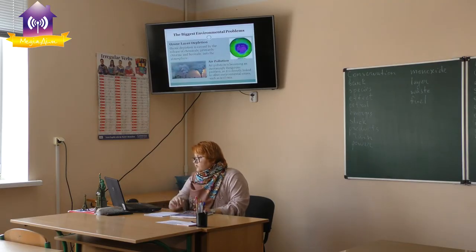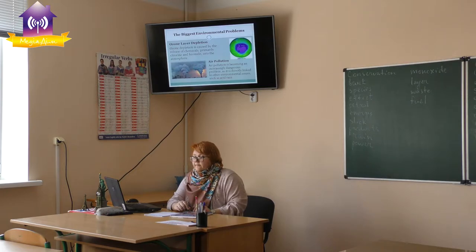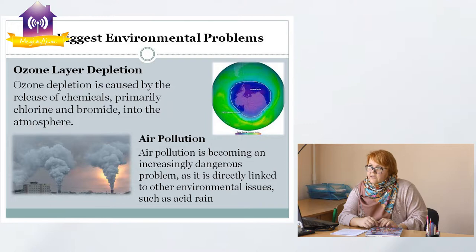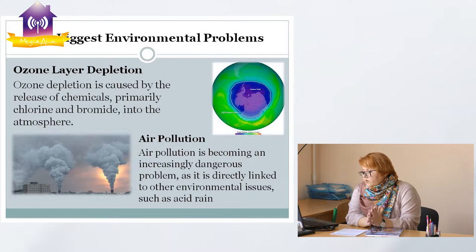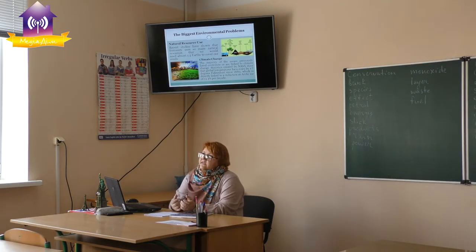Next, ozone layer depletion, or holes in the ozone layer. I'm sure you've heard about them. Ozone depletion is caused by the release of chemicals, primarily chlorine and bromine, into the atmosphere. Then next, air pollution. Air pollution is becoming an increasingly dangerous problem as it is directly linked to other environmental issues such as acid rain.